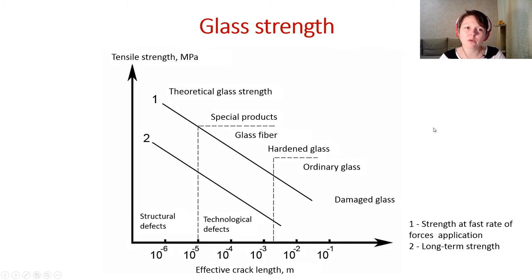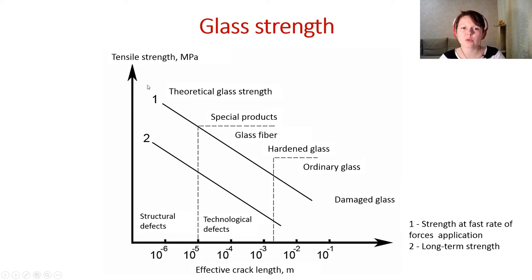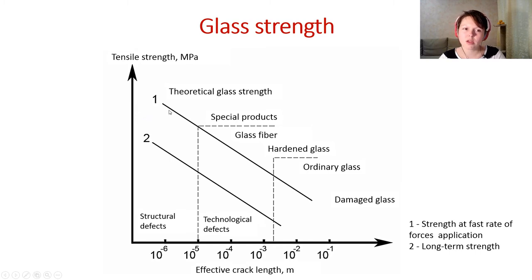From the diagram we can see that effective crack length decreases as the tensile strength of the glass increases. In this region we have theoretical glass strength; line number one is strength at fast rate force application and line number two is long-term strength. The description of glass strength can be based on several theories: classical fracture mechanics (glass as an ideal elastic solid body), linear fracture mechanics, kinetic fracture theory, and Griffith energy fracture theory.